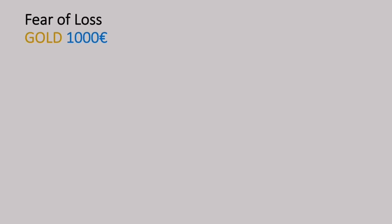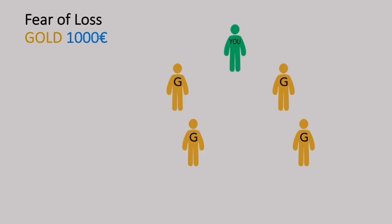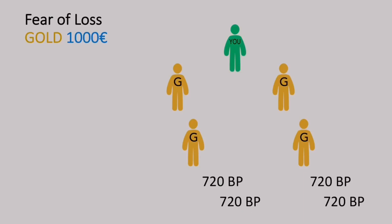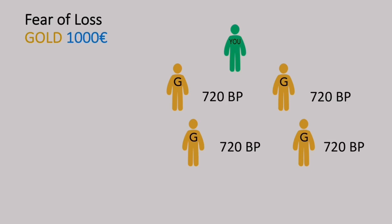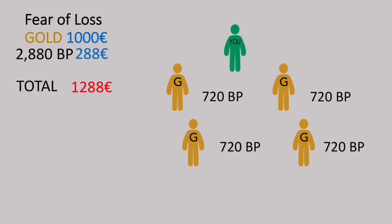Fear of Loss with the gold package: this is you — you invite 2 gold packages on your left and 2 gold packages on your right. Each gold package gets 720 binary points, giving a total of 2,880 binary points, or 288 euros. Adding the 1,000 euros Fear of Loss bonus, you get a total of 1,288 euros.